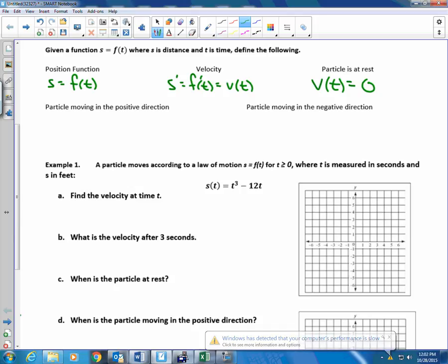The particle is moving to the right or up when v(t) is greater than zero. When the velocity is positive, it's moving in the positive direction. And when the velocity is negative, it's moving in the negative direction.